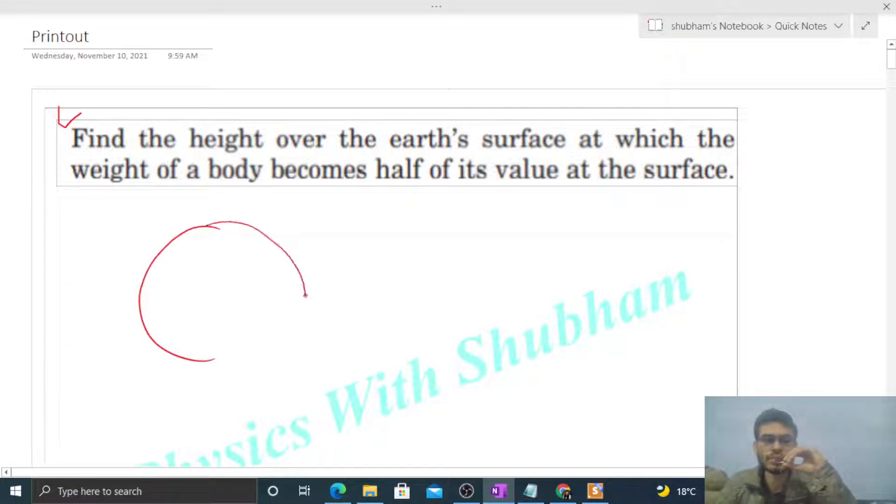So it's the Earth. Let's say mass capital M and radius capital R. And what is weight? Weight is the force by which the earth pulls the body, right? So when the body is present at the surface of this earth, let's say mass of body is small m.